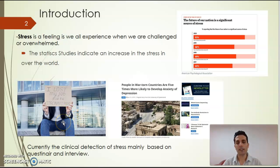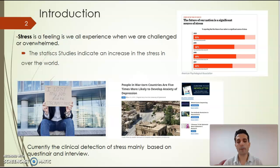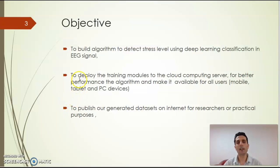Currently, the clinical detection method for stress is mainly based on questionnaires and interviews with patients, but this cannot be considered very accurate because patients can still lie about their mental condition. Because of this, the stress problem among society is rising, so we need to move from this traditional way of stress detection to a more accurate system.